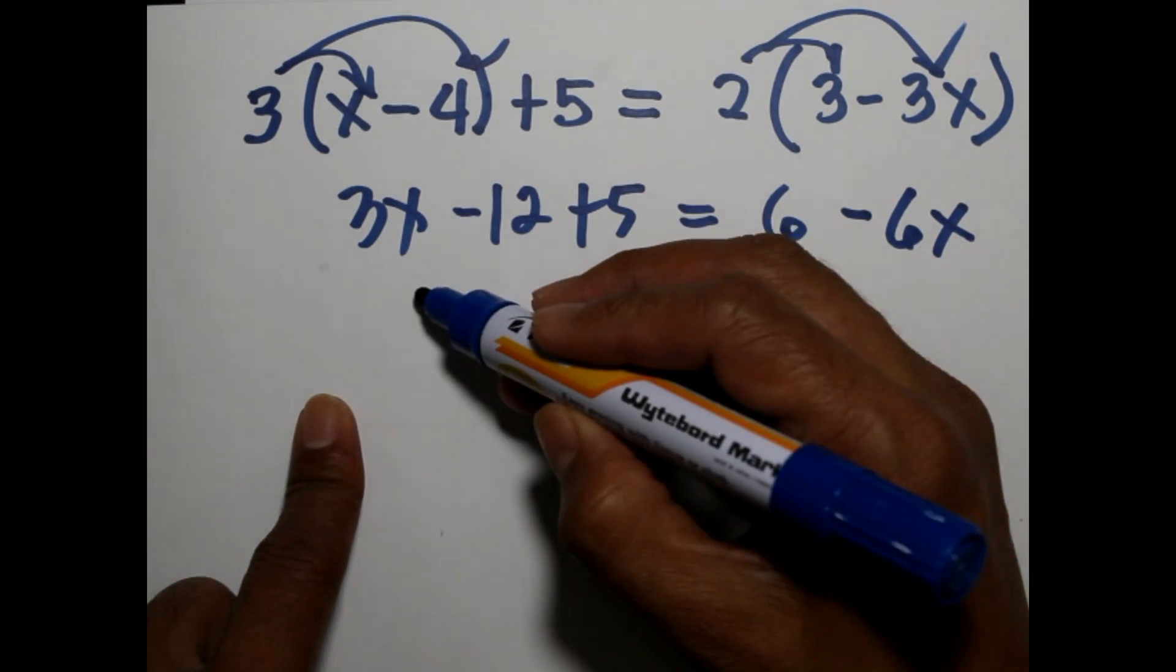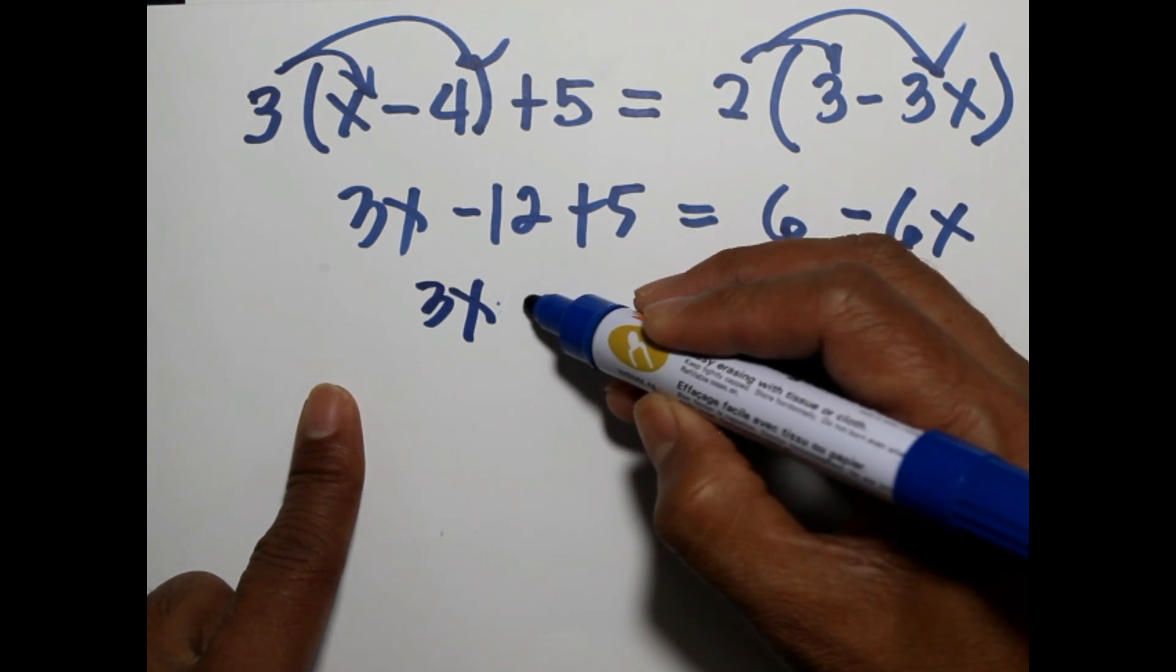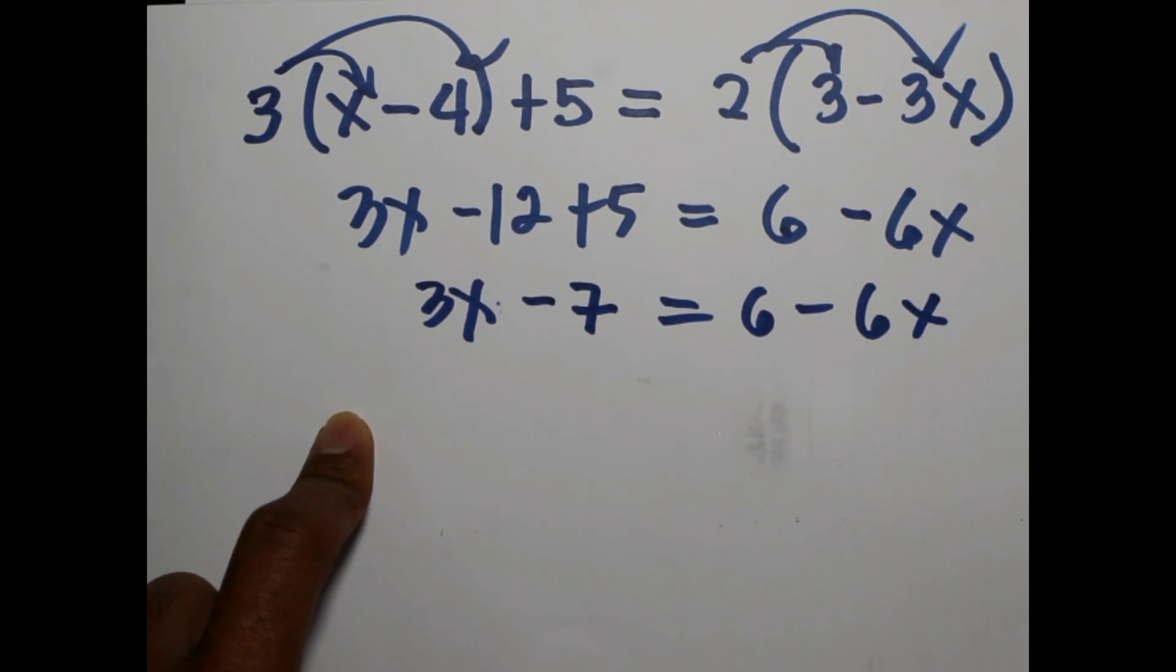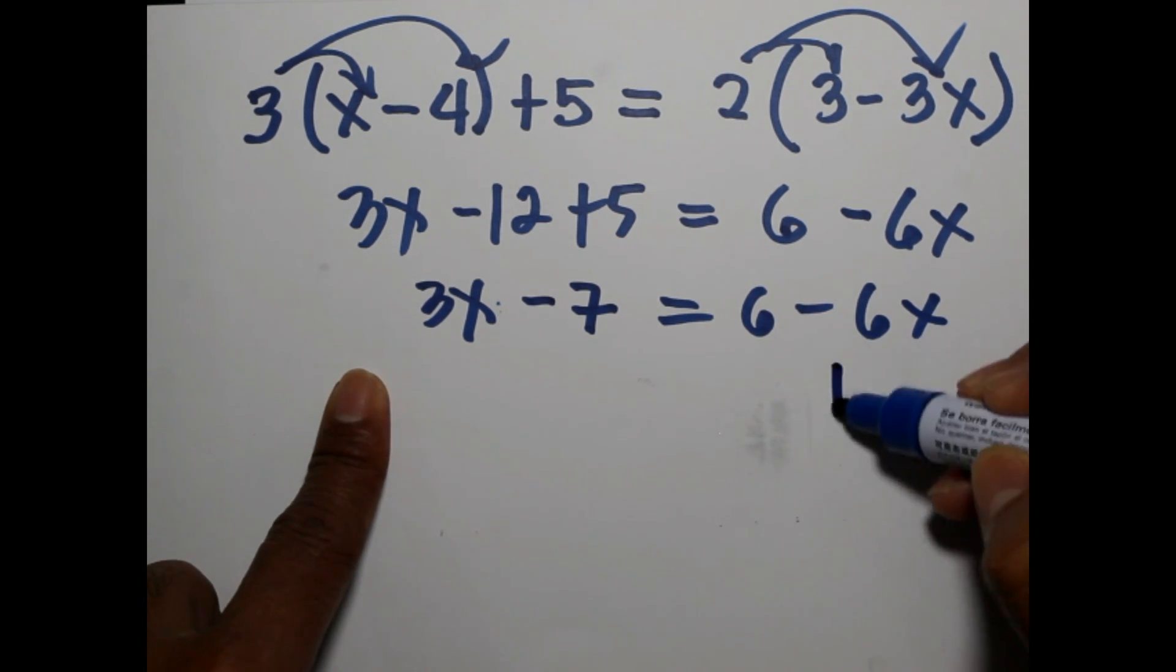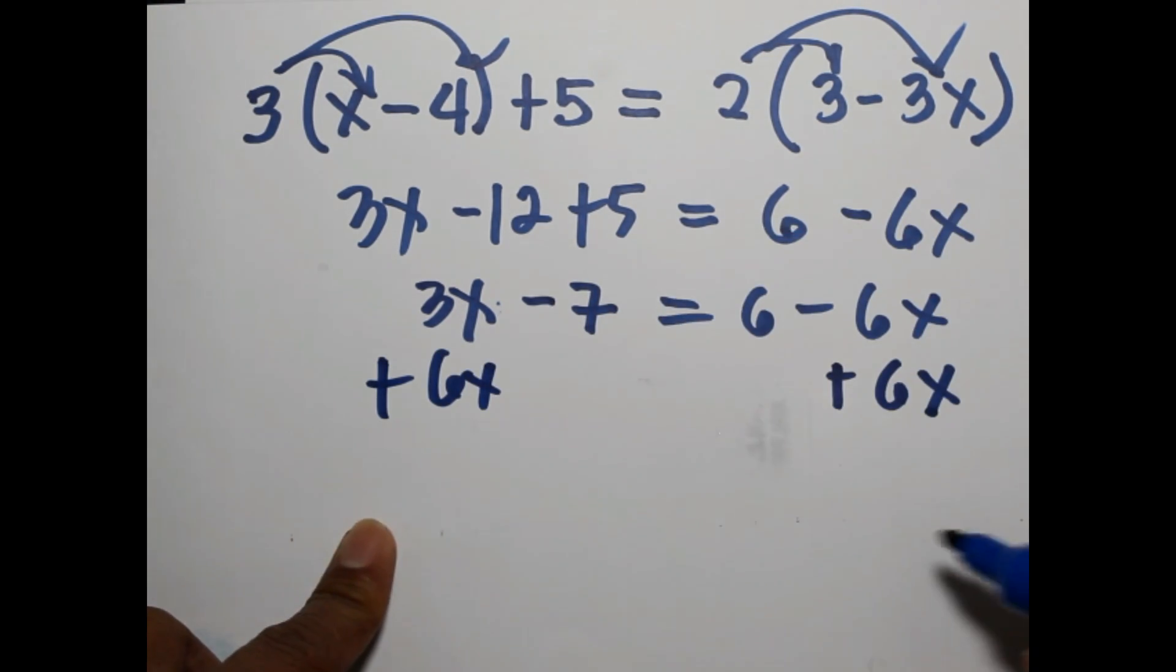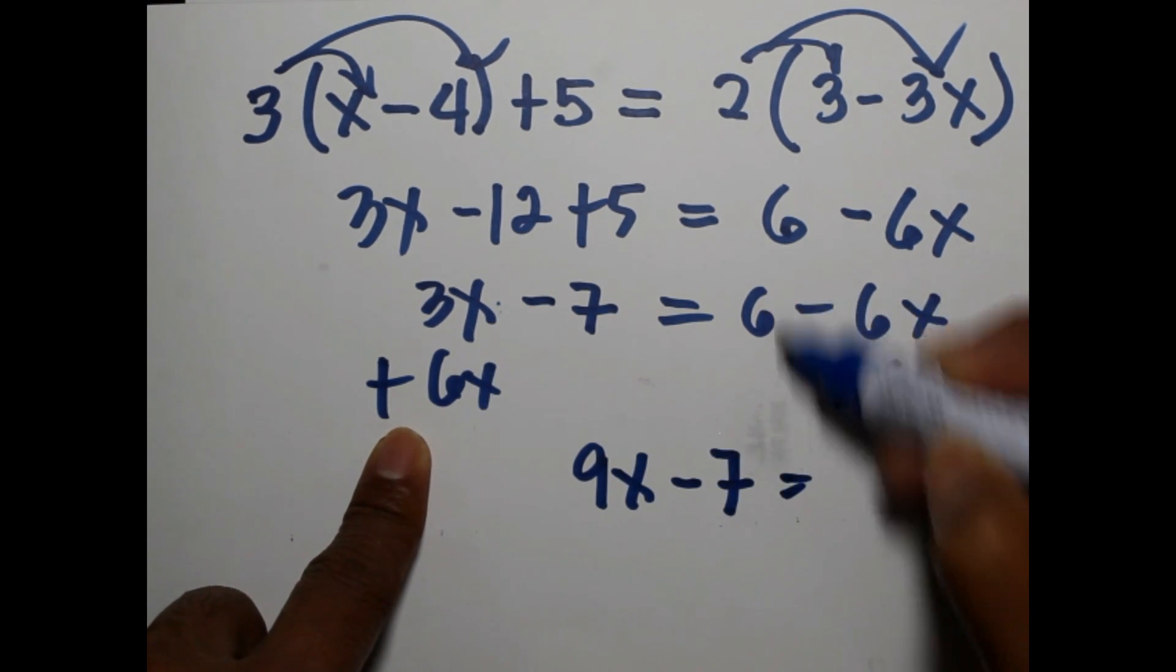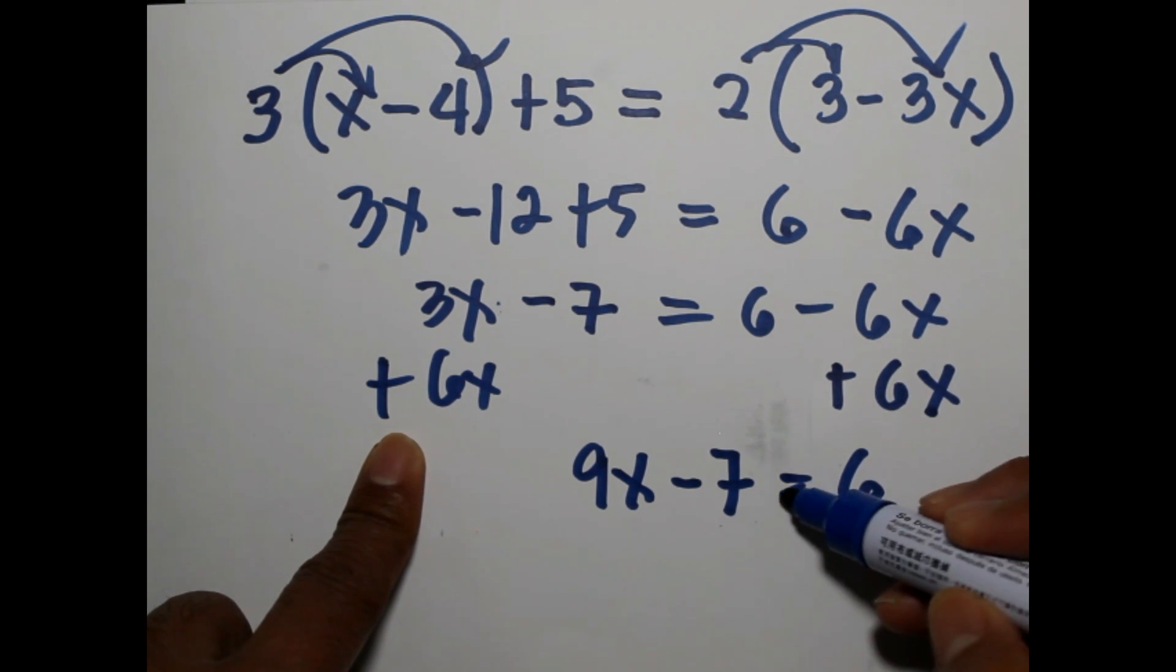So that's 3x. We will combine like terms. So 3x, negative 12 plus 5, that's negative 7, equals 6 minus 6x. Now in this case, we will gather the x term on the left side, so we will add positive 6x. This now equals 3x plus 6x, that's 9x minus 7 equals 6x, negative 6x plus 6x, that's 0.